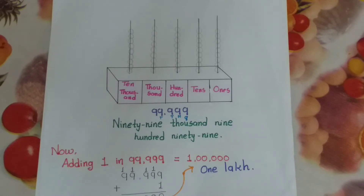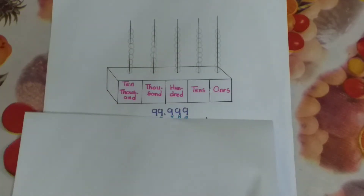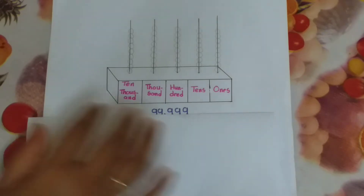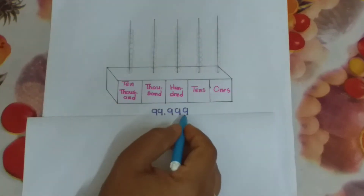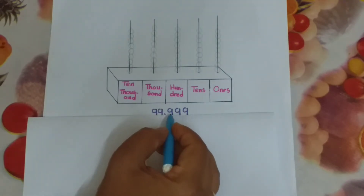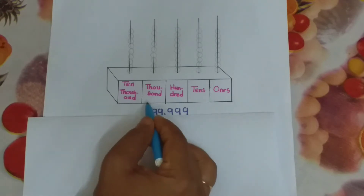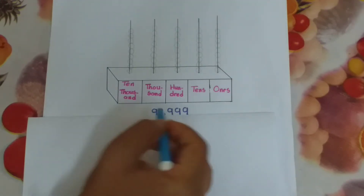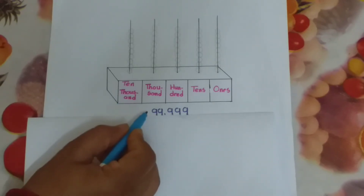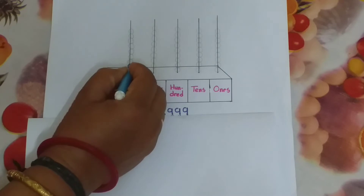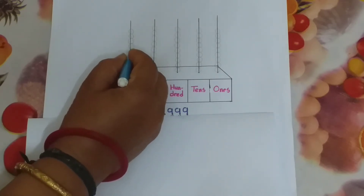Now we have to show 99,999 on the abacus. On the 1s place, 9 is there. 10s place, also 9. 100s place, 9. 1,000s place, 9. 10,000s place, 9. So we will start from 10,000 — we have to make 9 beads on each place.